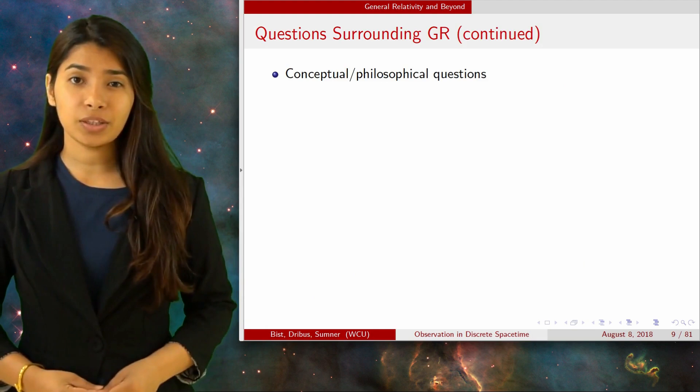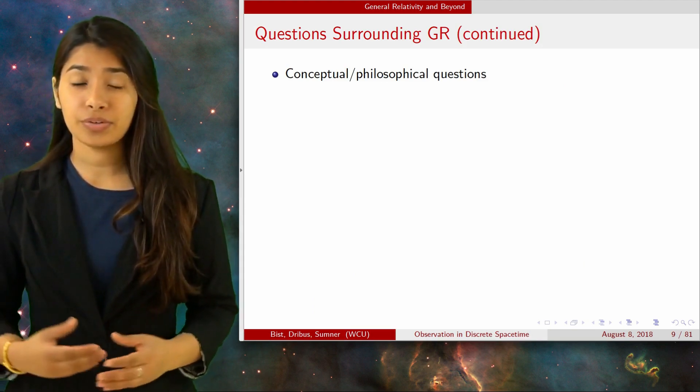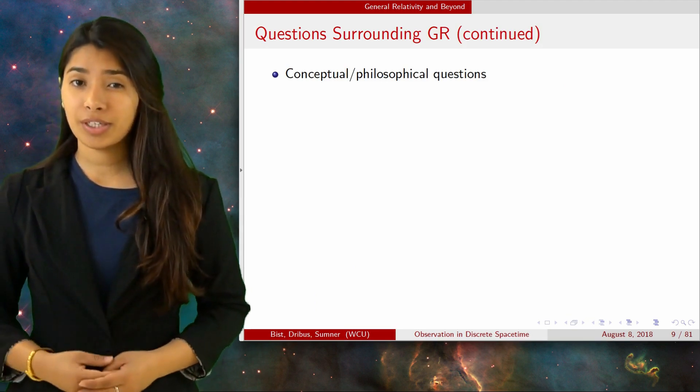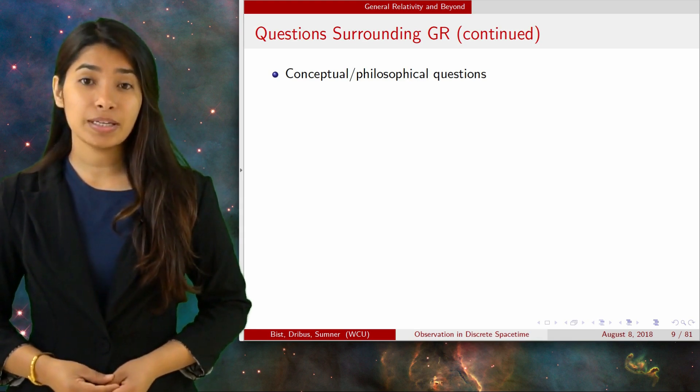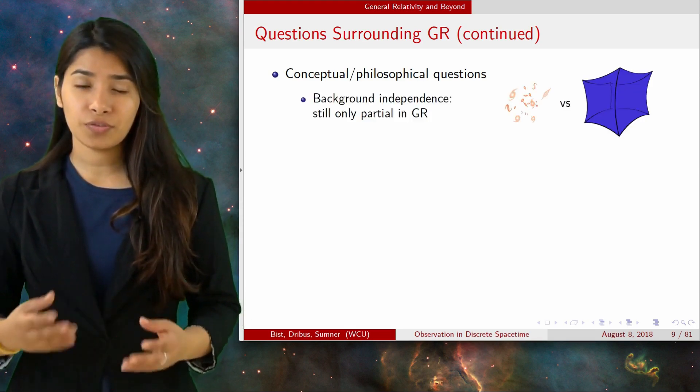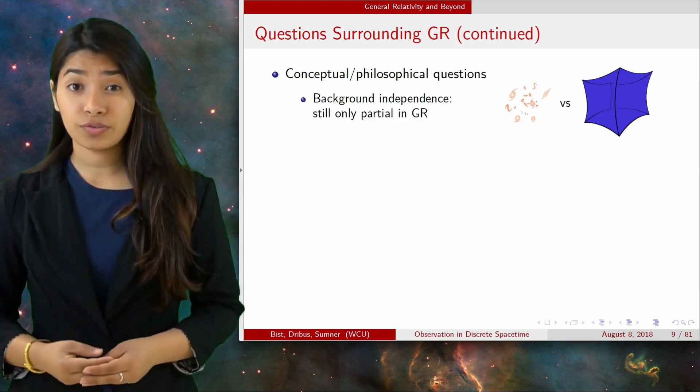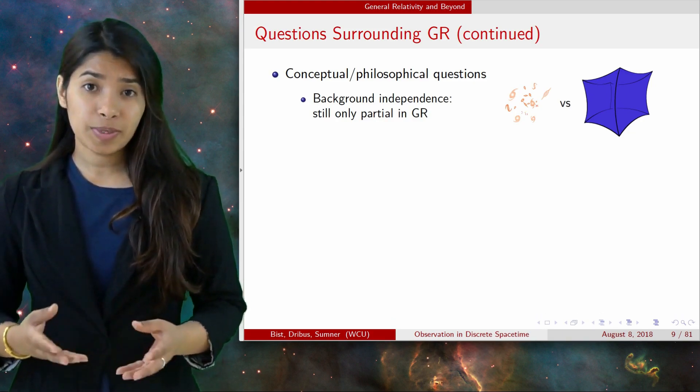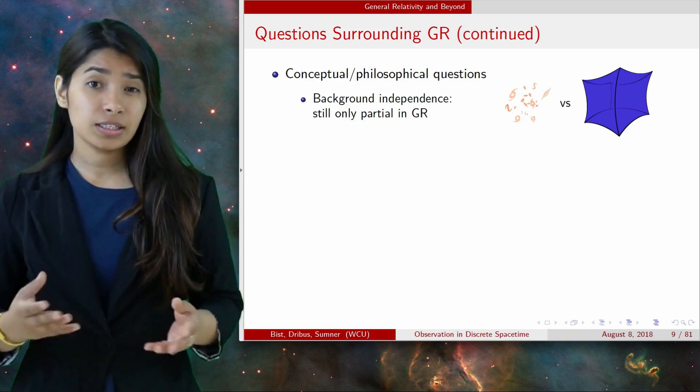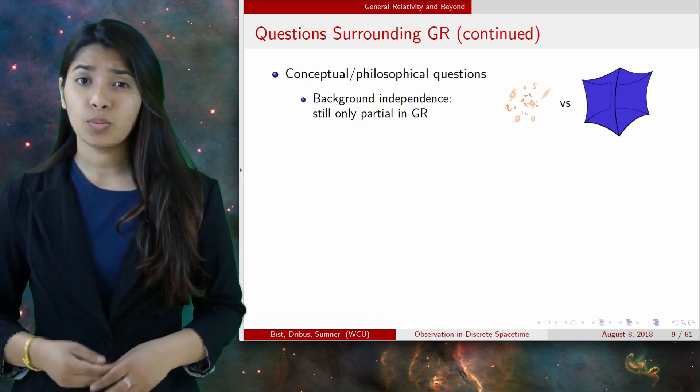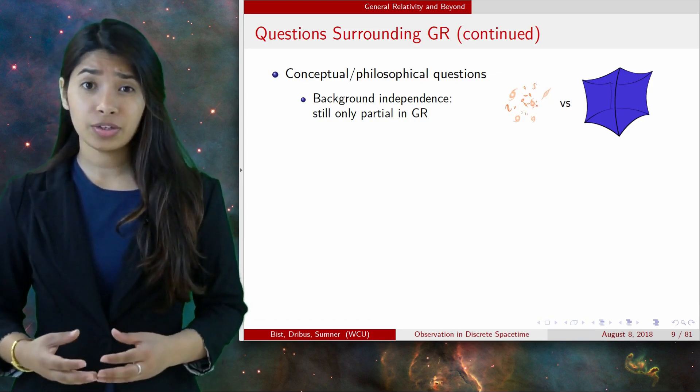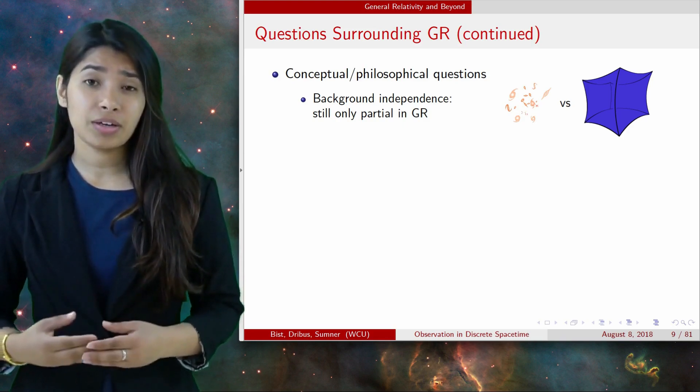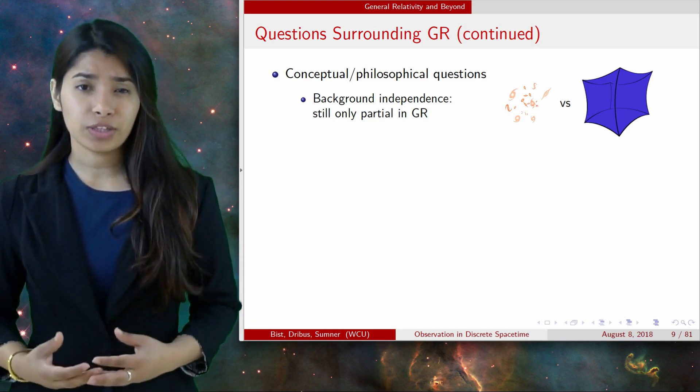There are some conceptual and philosophical questions surrounding general relativity and how it relates to other theories. We often hear that general relativity is background independent, meaning that it does not invoke a fixed space-time background like Newtonian physics and special relativity. Even though space-time is dynamic in general relativity, it is still distinct from matter-energy. What we would really like to be a unified theory is where space-time and matter-energy merge together from something more fundamental.